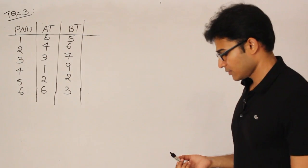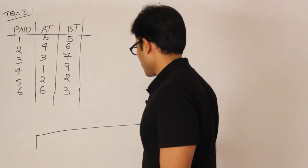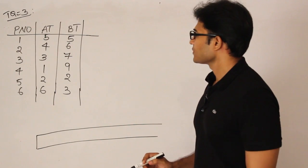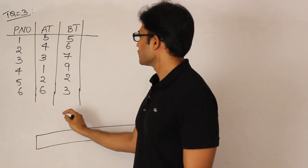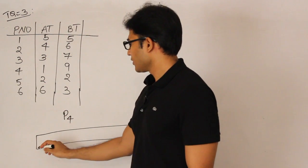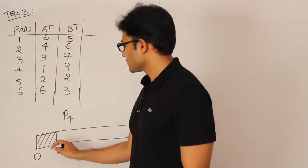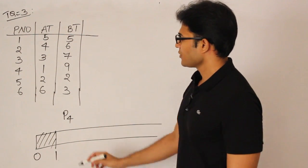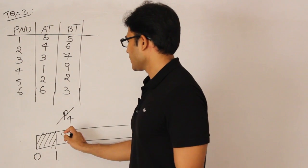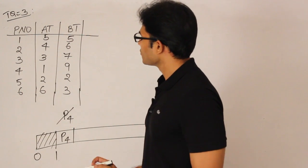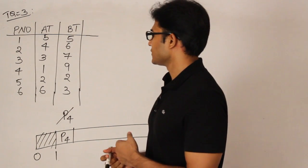Let's solve this using Round Robin. First, maintain the queue and the Gantt chart. The first process to arrive is P4 at time 1, so P4 will initially be in the queue. In the Gantt chart, we start at 0 but are idle until time 1 since no process is available. At time 1, we schedule P4 — the only available process — and it executes for one time quantum, which is 3 units.